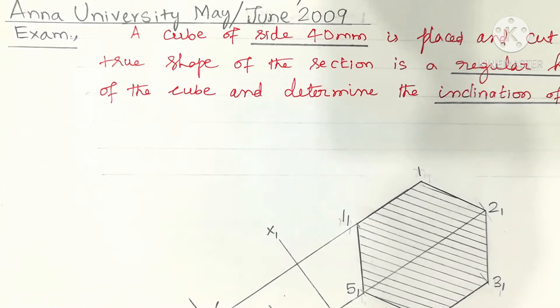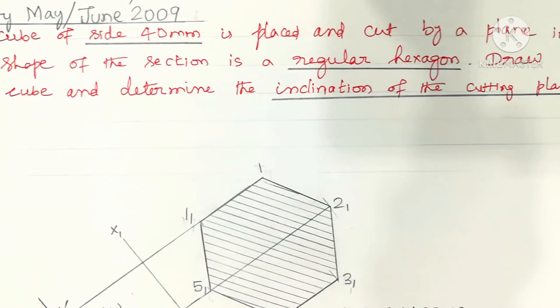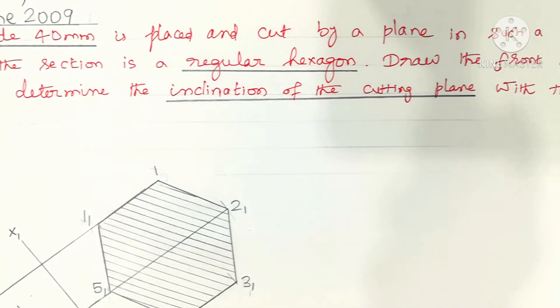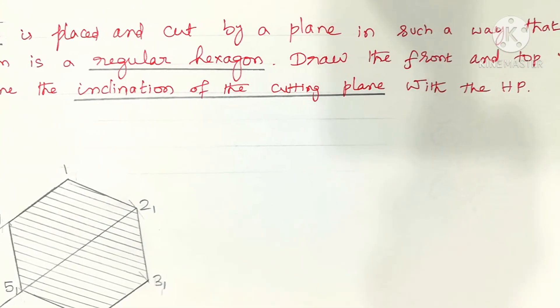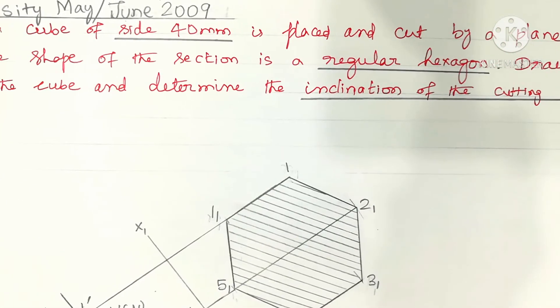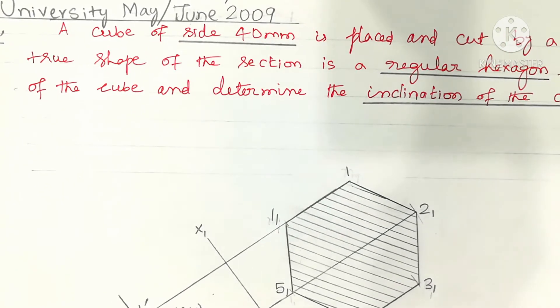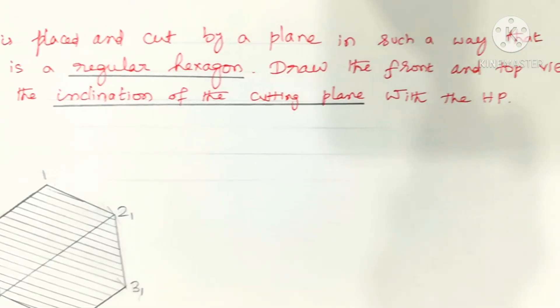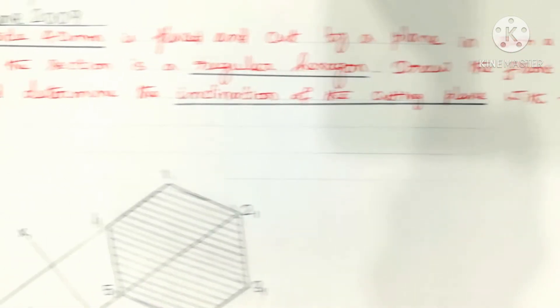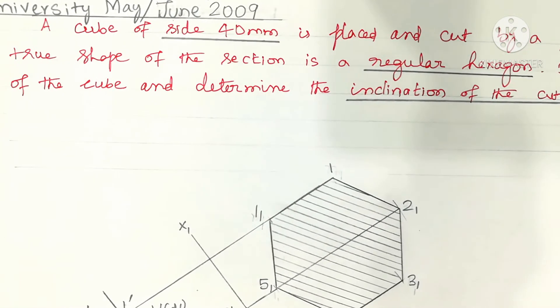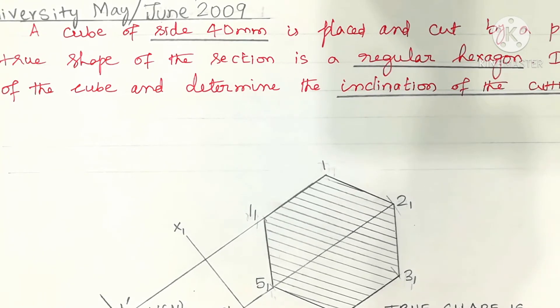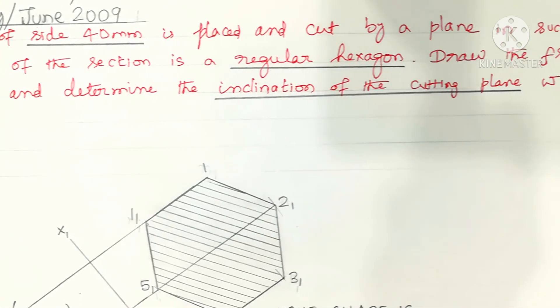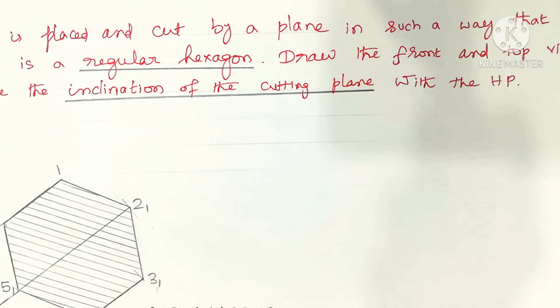A cube of side 40 mm is placed and cut by a plane in such a way that the true shape of the section is a regular hexagon. Draw the front and top views of the cube and determine the inclination of the cutting plane with the edge.